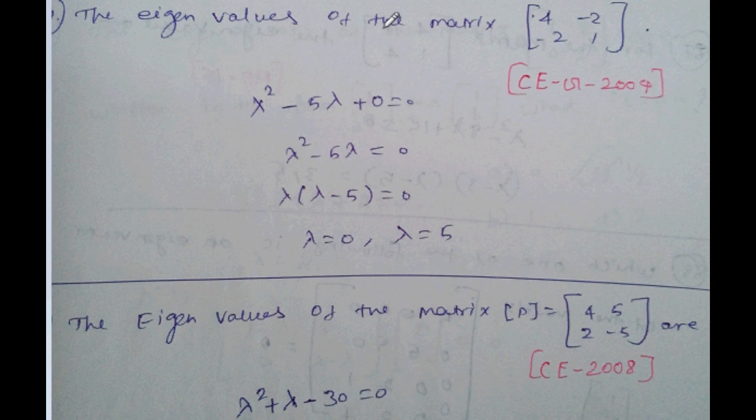The eigenvalue of the matrix [4, -2; -2, 1], Computer Science 2004. Lambda squared plus 4 plus 1 minus 5, 4 minus 4 equal to 0. So lambda squared minus 5 lambda equal to 0. Lambda commonly outside: lambda times lambda minus 5 equal to 0. Lambda equal to 0 and lambda equal to 5.